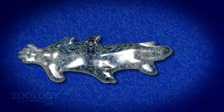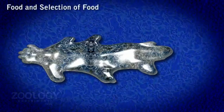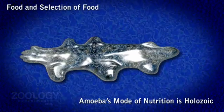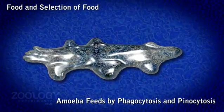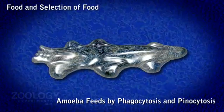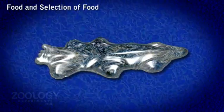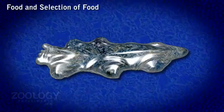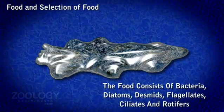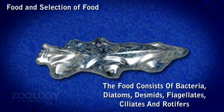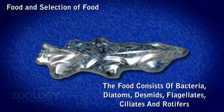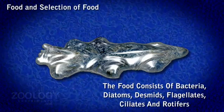Amoeba Proteus is carnivorous and shows holozoic mode of nutrition. Type of feeding is phagocytosis and penocytosis, a mechanism in which food is engulfed in a solid form. The types of food are bacteria, diatoms, decimates, flagellates, ciliates and rotifers.